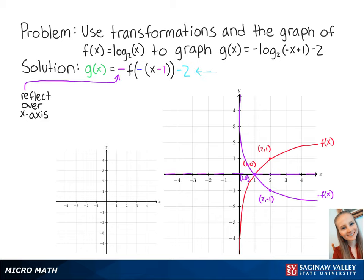Subtracting 2 from the function means that we will shift our new graph down by 2 units. So our new points are at 2, negative 3 and 1, negative 2. Connecting these points, we get the graph of negative f of x minus 2.